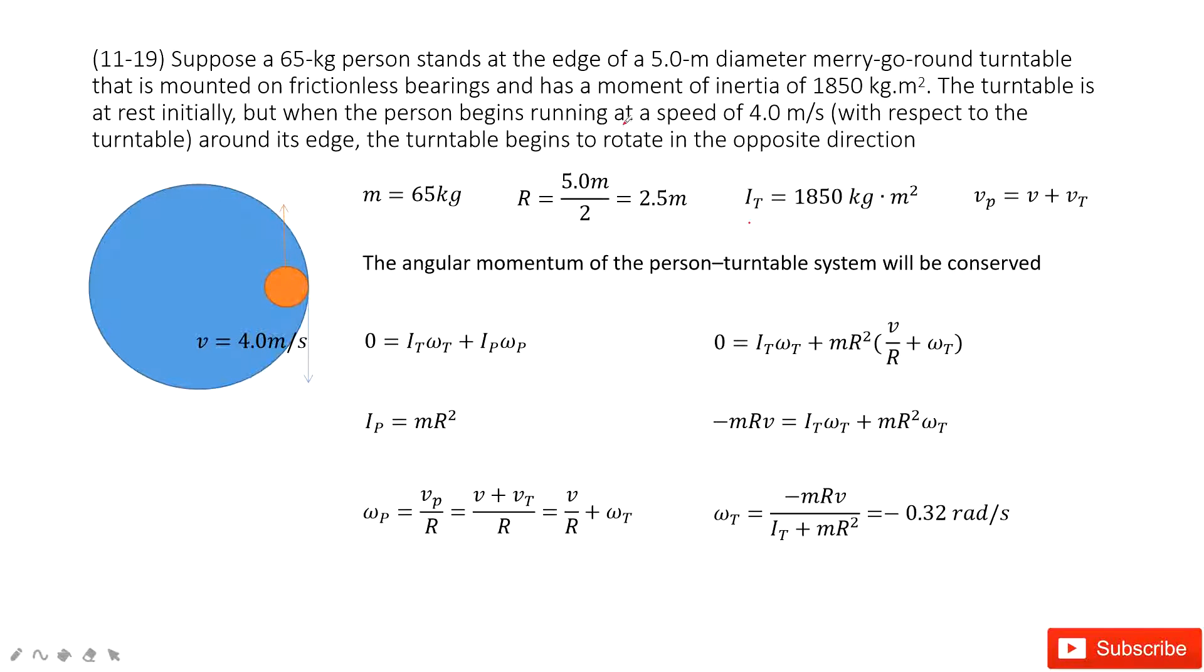First of all, we consider the speed the person began running as the turntable is given. It is 4 meters per second. Now we can see it tells us this velocity, 4 meters per second, is the person relative to the turntable. So if we consider this system, we can see the velocity of the person to the ground is the relative velocity. It should be the velocity of the person to the ground equal to velocity of the person to the table plus the velocity turntable to the ground.